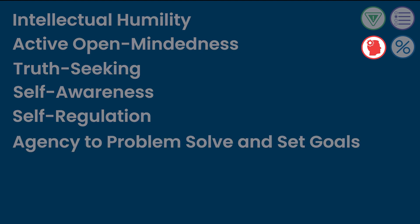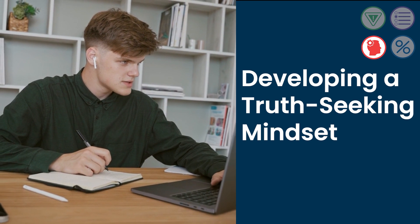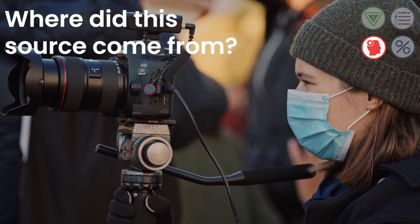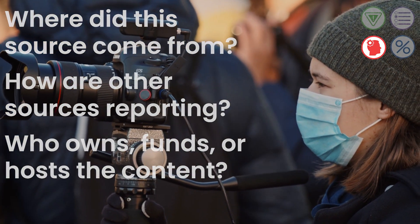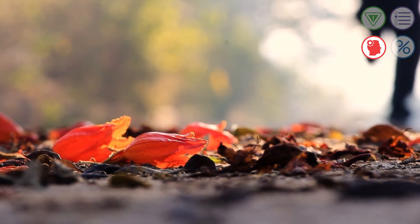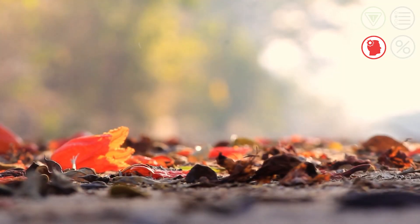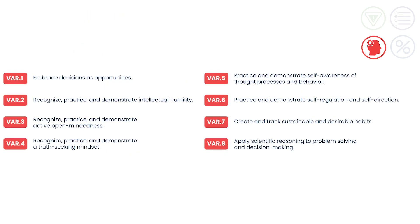There are many ways that VAR can play out in the classroom. To develop a truth-seeking mindset, one teacher had his high school students evaluate the credibility of online information by guiding them with specific questions, such as where a source came from, if other sources were reporting similar or different information on the same topic, and who owns, funds, or hosts the content. To support conscious habit formation, another teacher taught students about habit loops and then had them identify the habits they wanted to nurture and those they wanted to change. Whether taught as standalone lessons or mapped onto existing curricular knowledge, the standards in the VAR domain are meant to support students' decision-making skills by having them learn how to manage their thoughts, feelings, and behaviors.